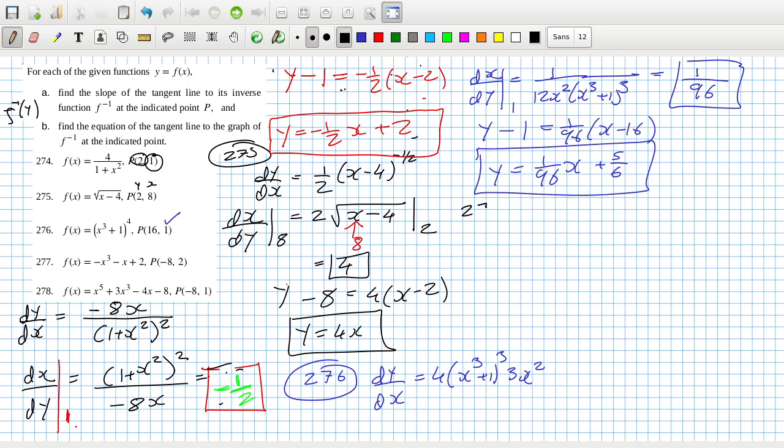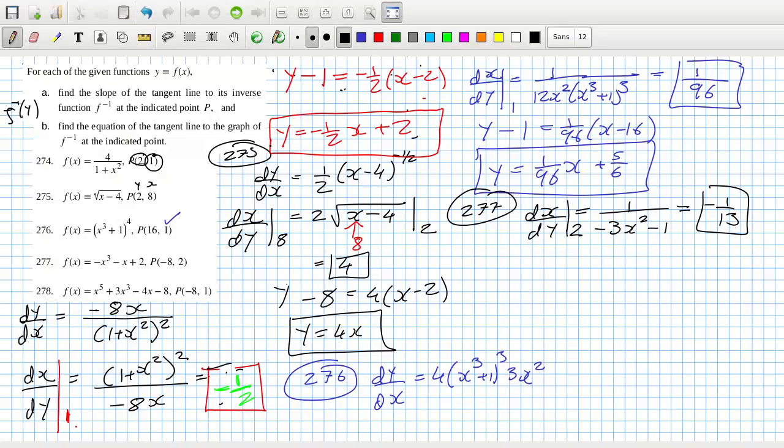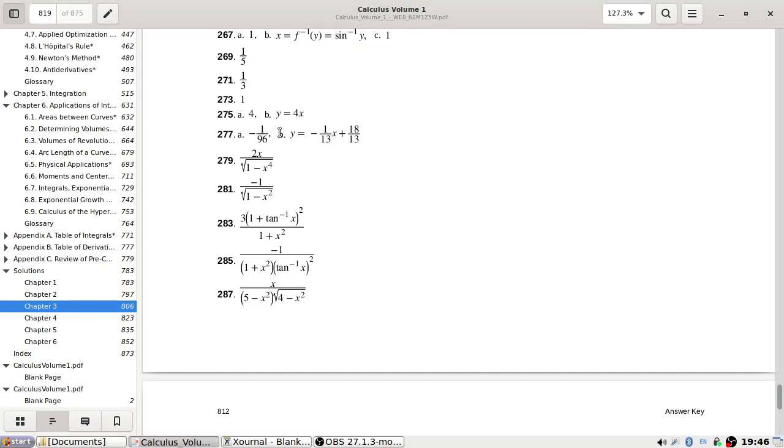Okay, 277. So dx/dy would be 1 over minus 3x squared minus 1, subbing in 2. So that's minus 1 over 13. Let's check it. Oh, that's weird. Why does it say minus 1 over 96, but here it says minus 1 over 13? Because obviously the slope of the tangent line and the equation of the tangent line, those two should match. So that's a bit weird. Let's continue, see what happens.